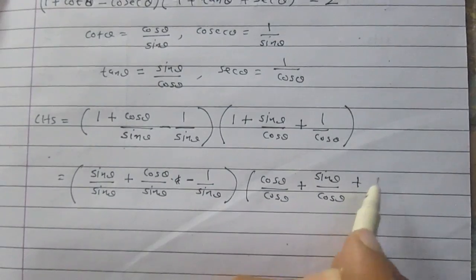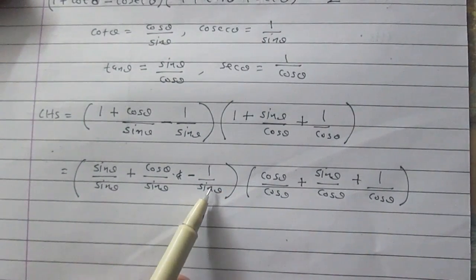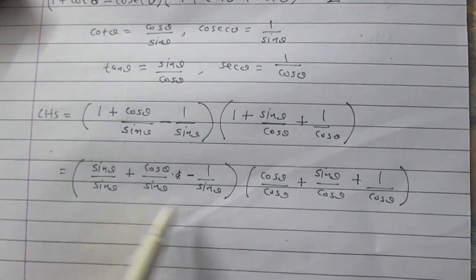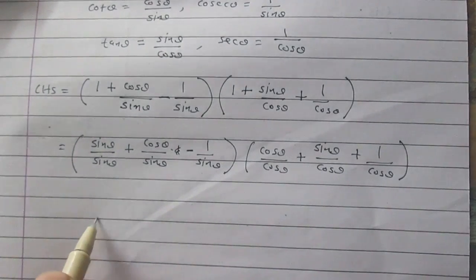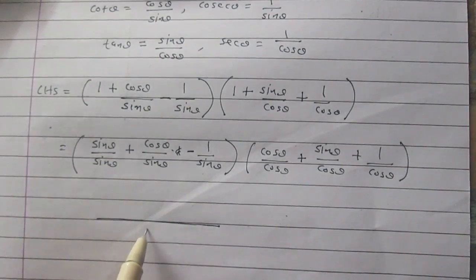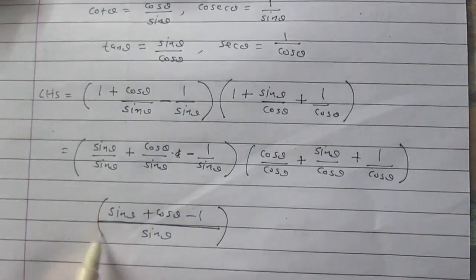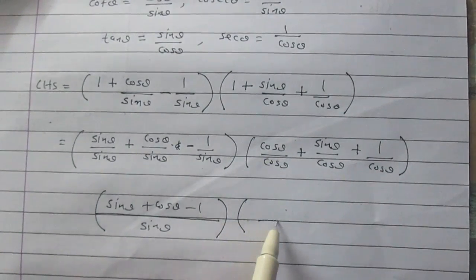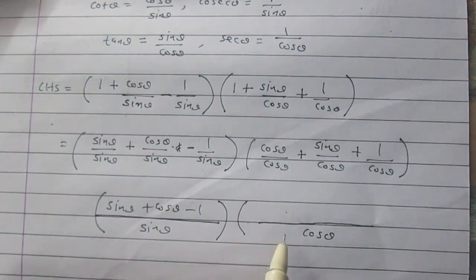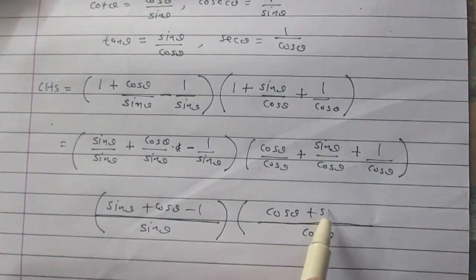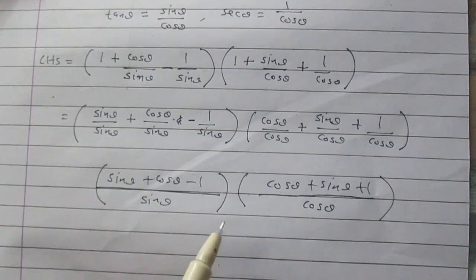In the first part of the LHS, all three fractions have the same denominator, sin θ, so we take sin θ as the LCM. Similarly, cos θ is the LCM of all denominators in the second part. We can then write the second part as (cos θ + sin θ + 1) / cos θ.